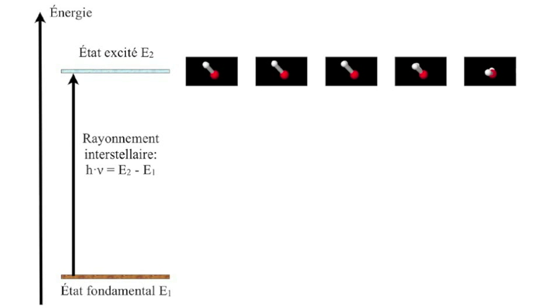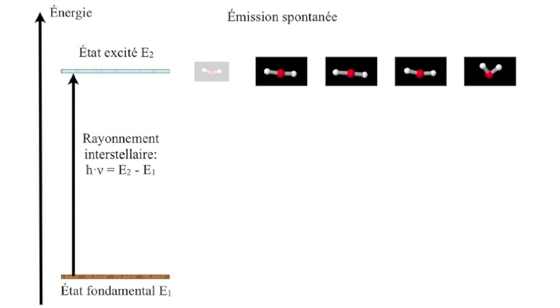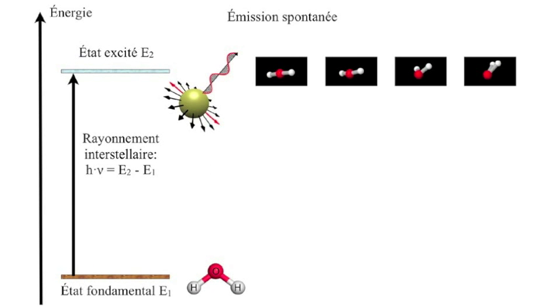After excitations, molecules may release their excess energy by emitting a photon having the same frequency as that of the photon responsible for the inversion process. This process is called spontaneous emission and does not lead to the maser effect.